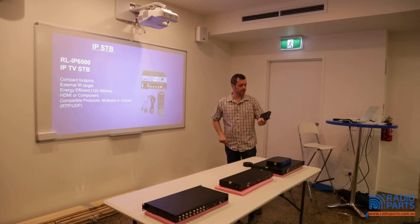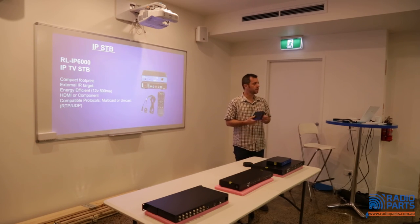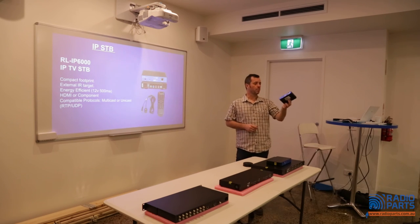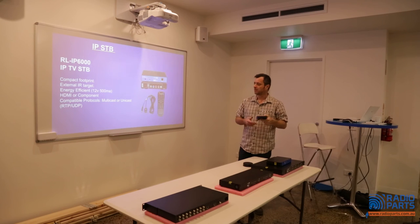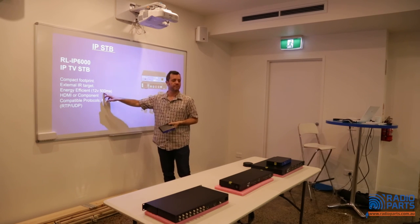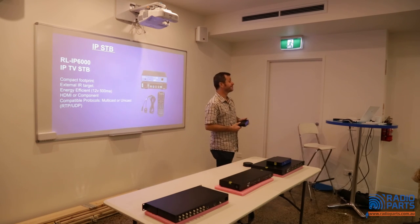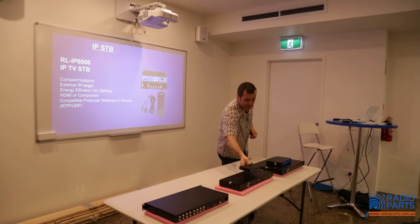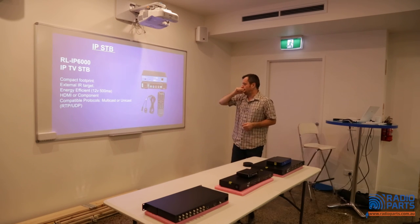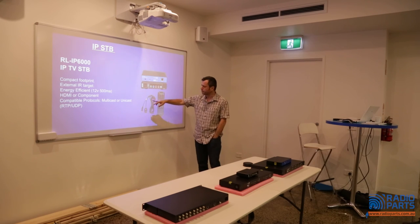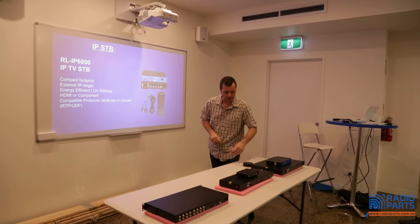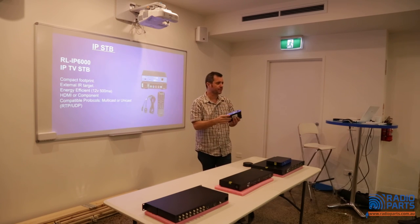For the TVs that don't have IP set-top boxes built in, you need an IP spot device. You can see it's small and compact, very efficient — it just runs off a little 500 mA power supply. It's got analog output or digital HDMI output. We've got an external IR target — you can mount that up behind the TV, plug in the target, and stick the target on the front of the TV.